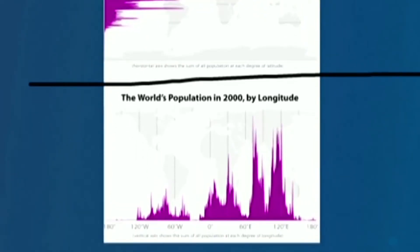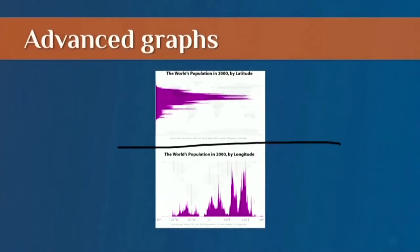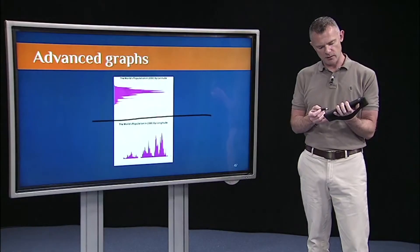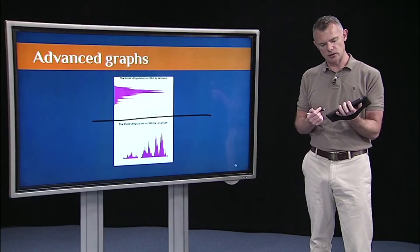Since we talked about longitude and latitude, and we talked about histograms, I wanted to show just these two very cool graphics that I picked off the internet. And what this shows is the world population as a function of latitude and as a function of longitude.